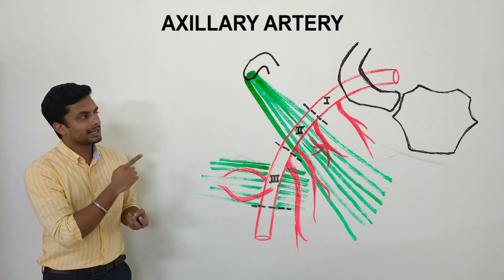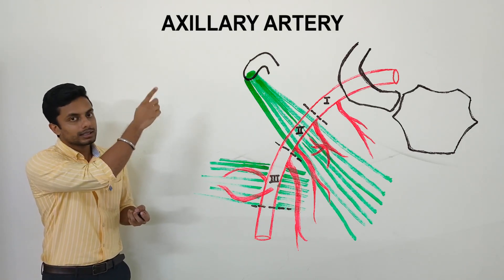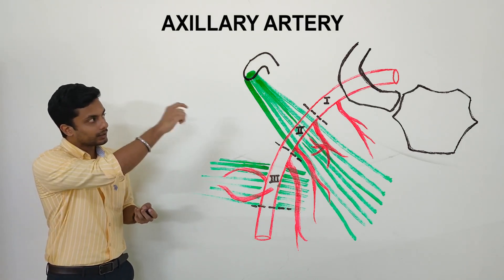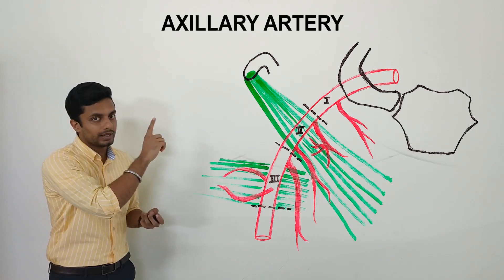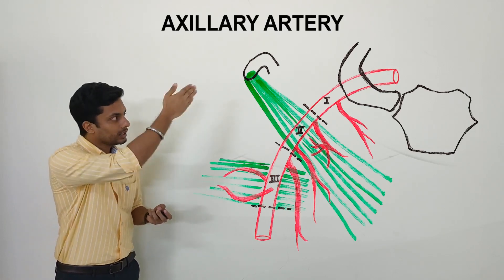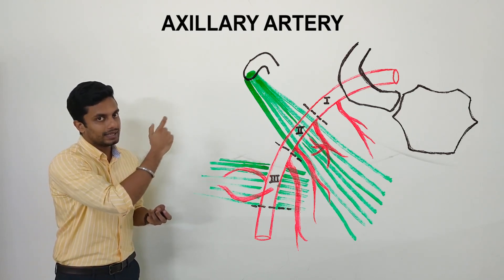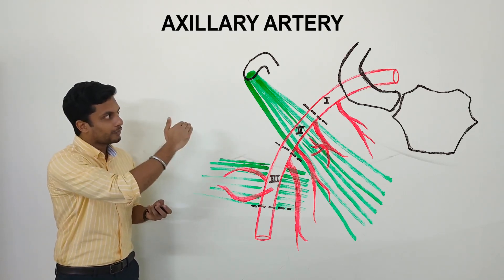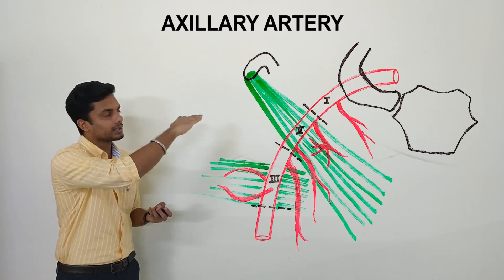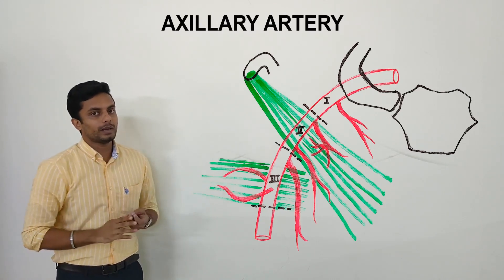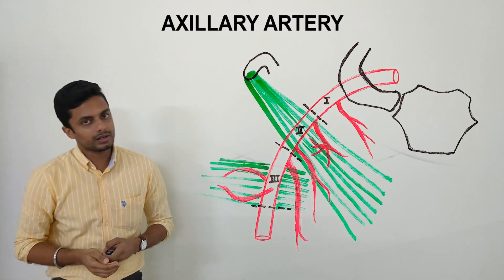In this diagram you can clearly see the three parts. Here we can see the first part, then the representation of the pectoralis minor muscle shown with green lines. Just deep to the pectoralis minor, the second part of the artery is lying. After that we can see the third part which extends to the lower border of the teres major muscle. So these are the three parts of the axillary artery.